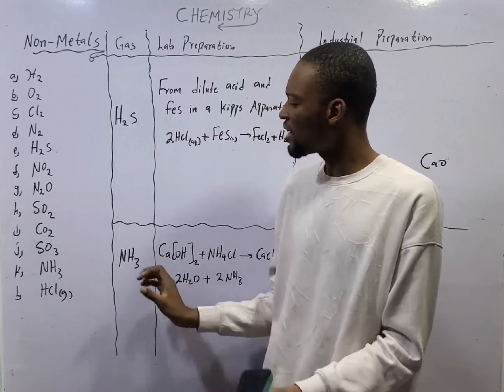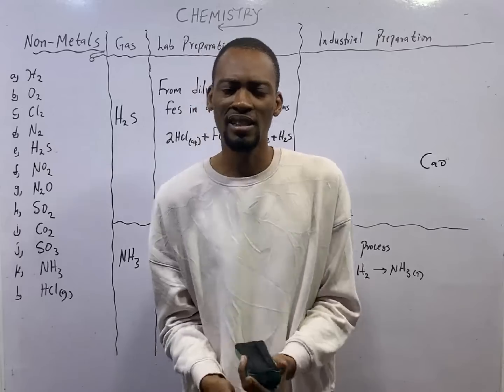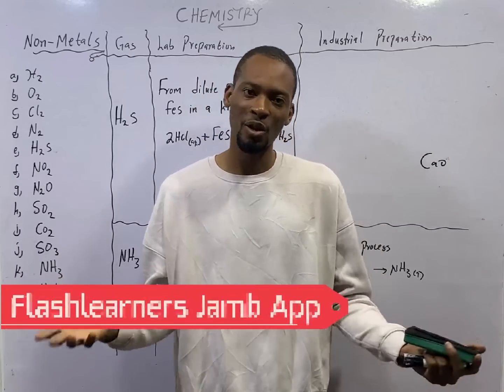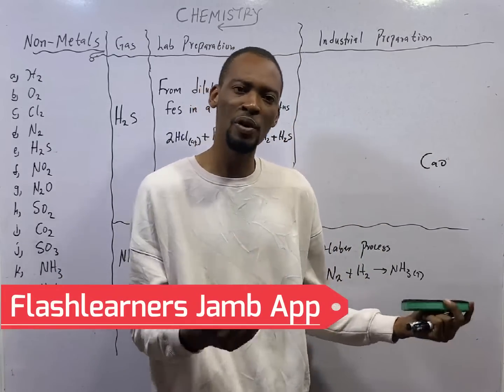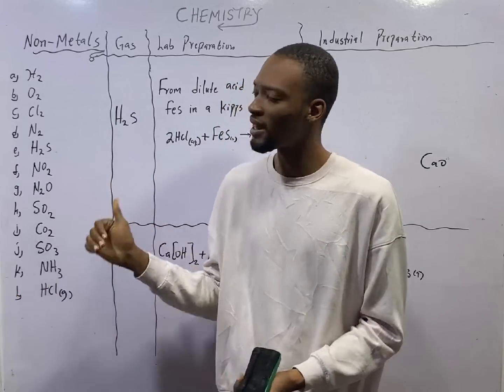So, what do you do? After each of the classes, get the Flash Learner JAMB app and begin to play with questions under non-metals and their compounds. Choose all the non-metals you want or choose non-metals as a topic.